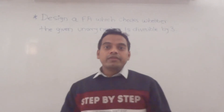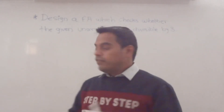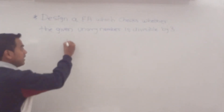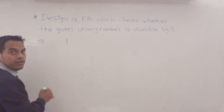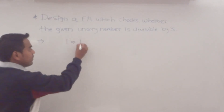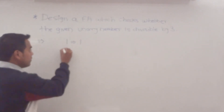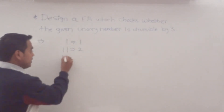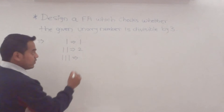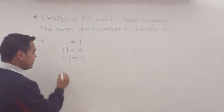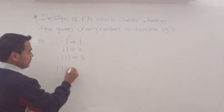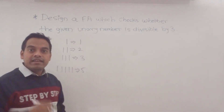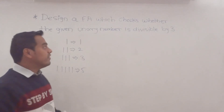Before going to that, what is meant by a unary number? If you consider 1 one, we represent it as 1. If there are 2 ones, it is represented as 2. If there are 3 ones, it is represented as 3. Likewise, if there are 5 ones, it is represented as 5. So this is nothing but the unary number.